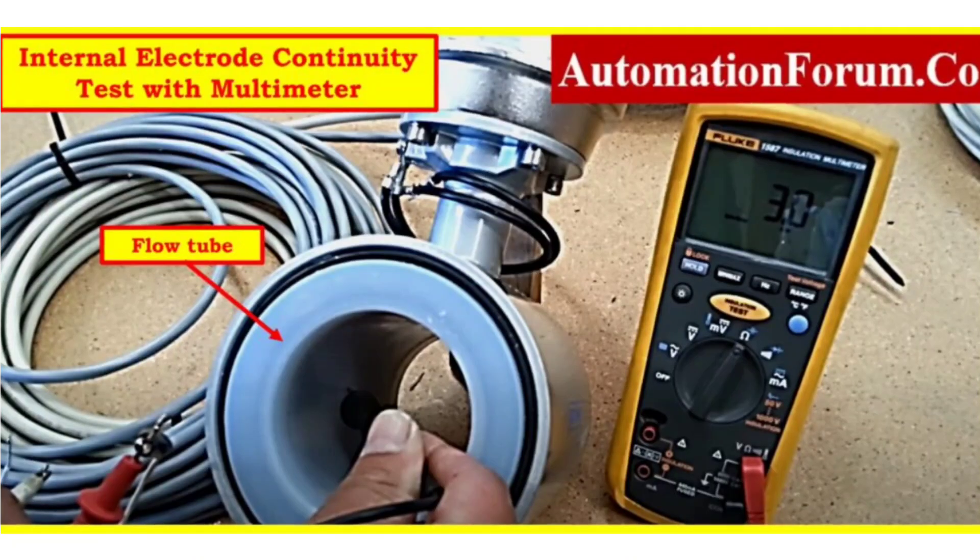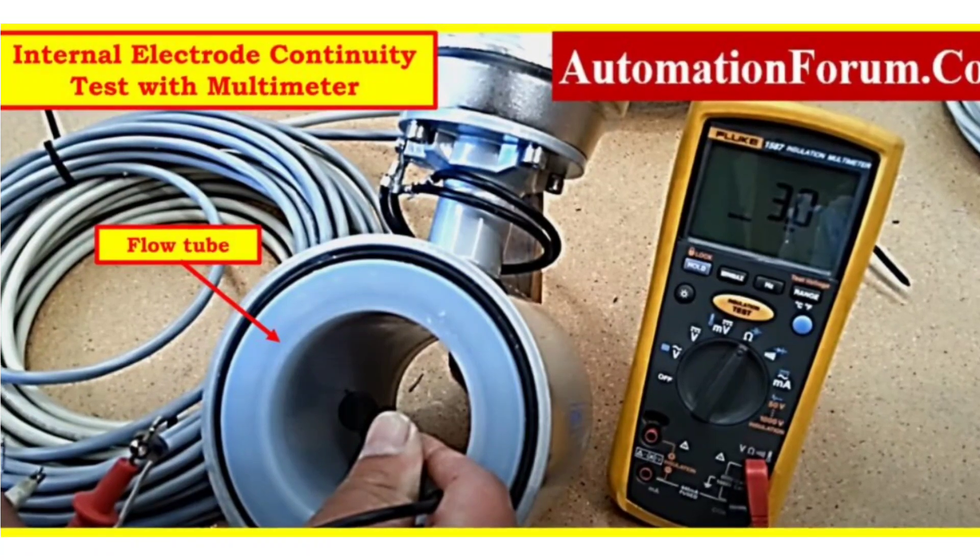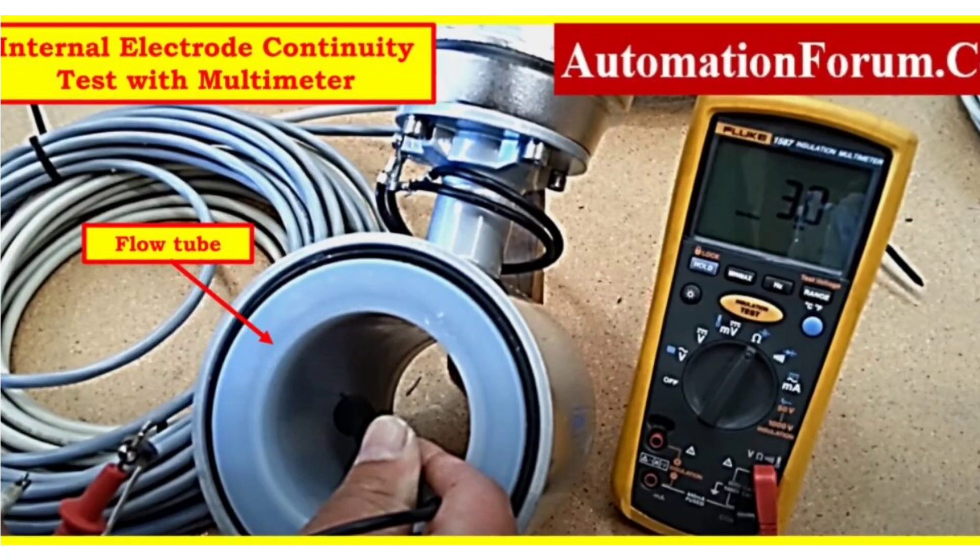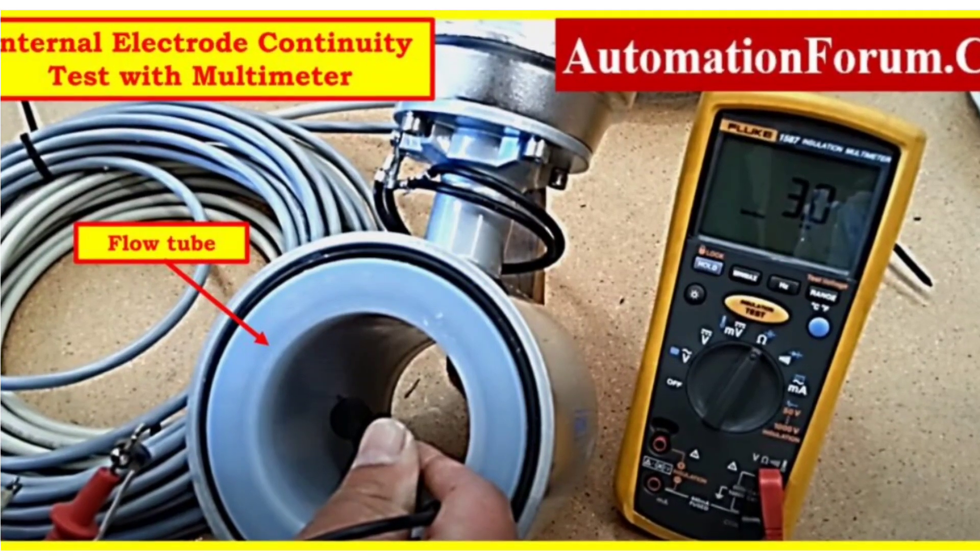Check Coil Resistance. Disconnect the Flow Tube from the Flow Meter Electronics to ensure safety. Using a multimeter, set it to the resistance (Ohms) measurement mode.